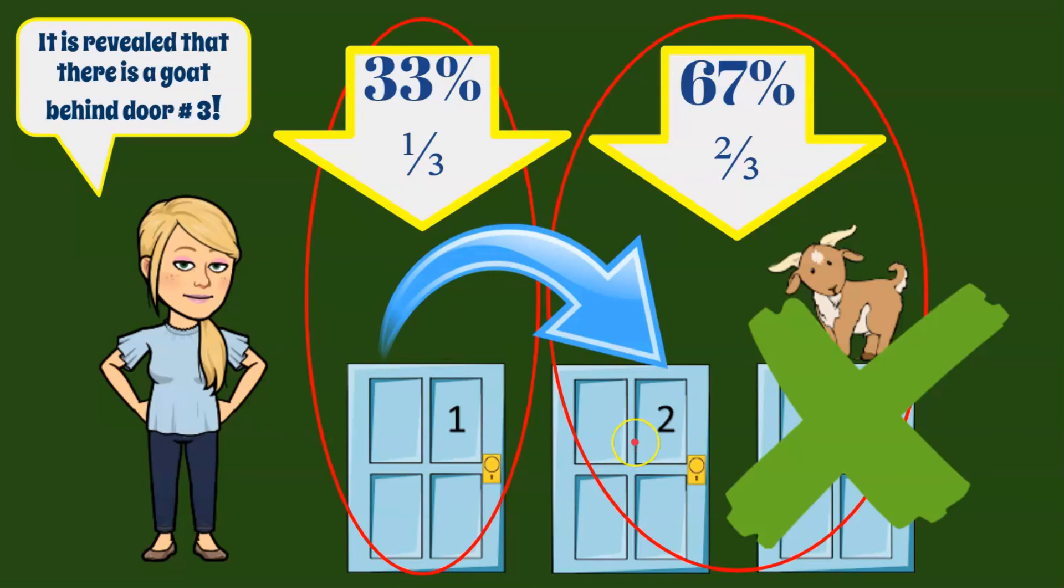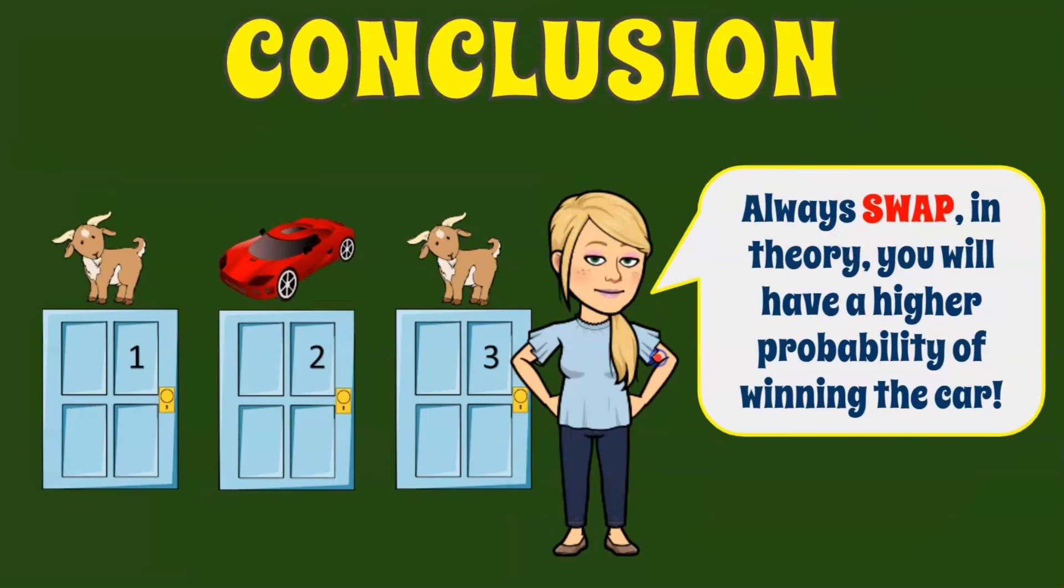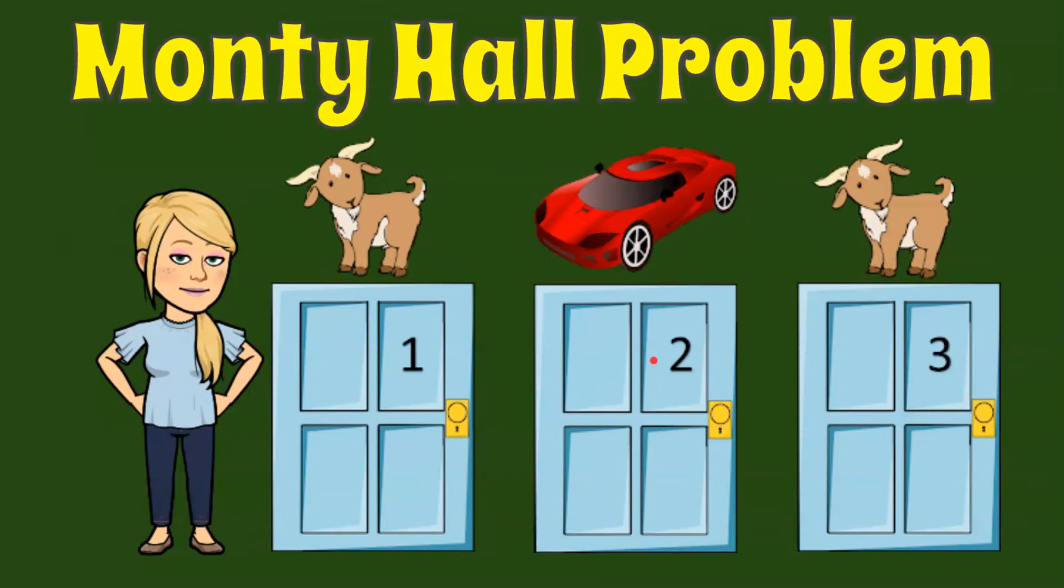So given this theory, this theoretical probability model, you should always switch and go to door number two. So I don't want a 33% chance of winning, I want a 67% chance of winning, and I'm always going to swap. So in theory, you will always have a higher probability of winning the car. So that's the Monty Hall problem.